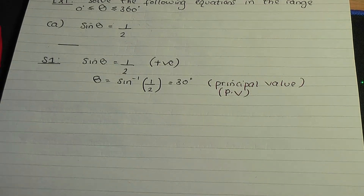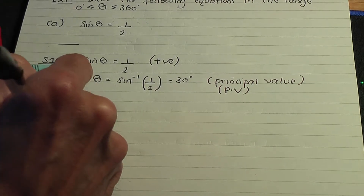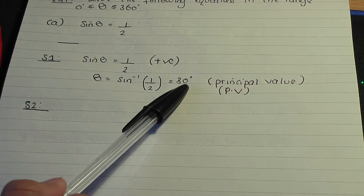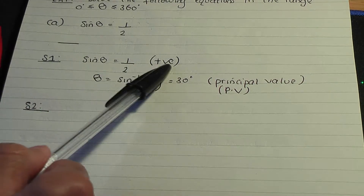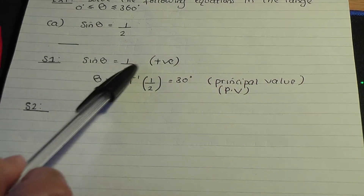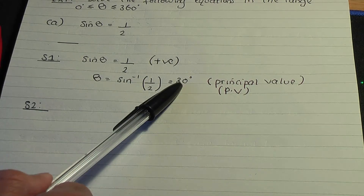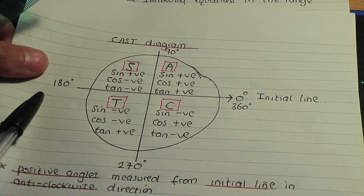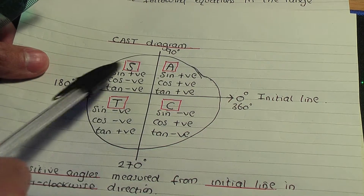Once you have your principal value, you go to step number 2. Step 2 is to plot 30 degrees where sine is positive. The plus half means sine is positive, so we need to plot 30 degrees on our CAST diagram where sine is positive — that's in the all quadrant (first quadrant) and in the sine quadrant (second quadrant).